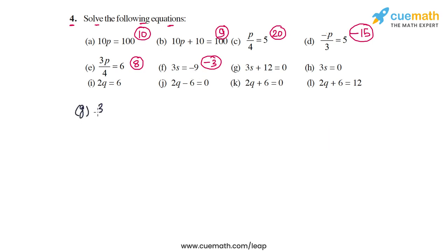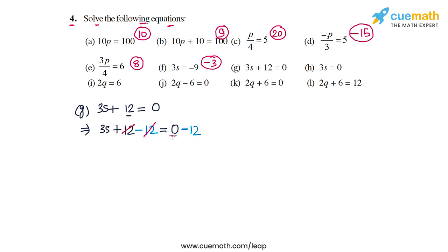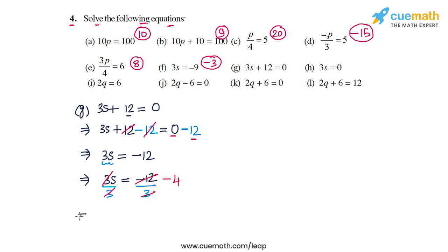In part g the equation is 3s plus 12 equal to 0. First we get rid of the 12 by subtracting 12 on both sides. The 12 terms cancel out on the LHS and on the RHS 0 minus 12 equals minus 12, giving 3s equal to minus 12. We then divide by 3 on both sides: the 3s cancel out and minus 12 by 3 is minus 4. So the solution in part g is s equal to minus 4.